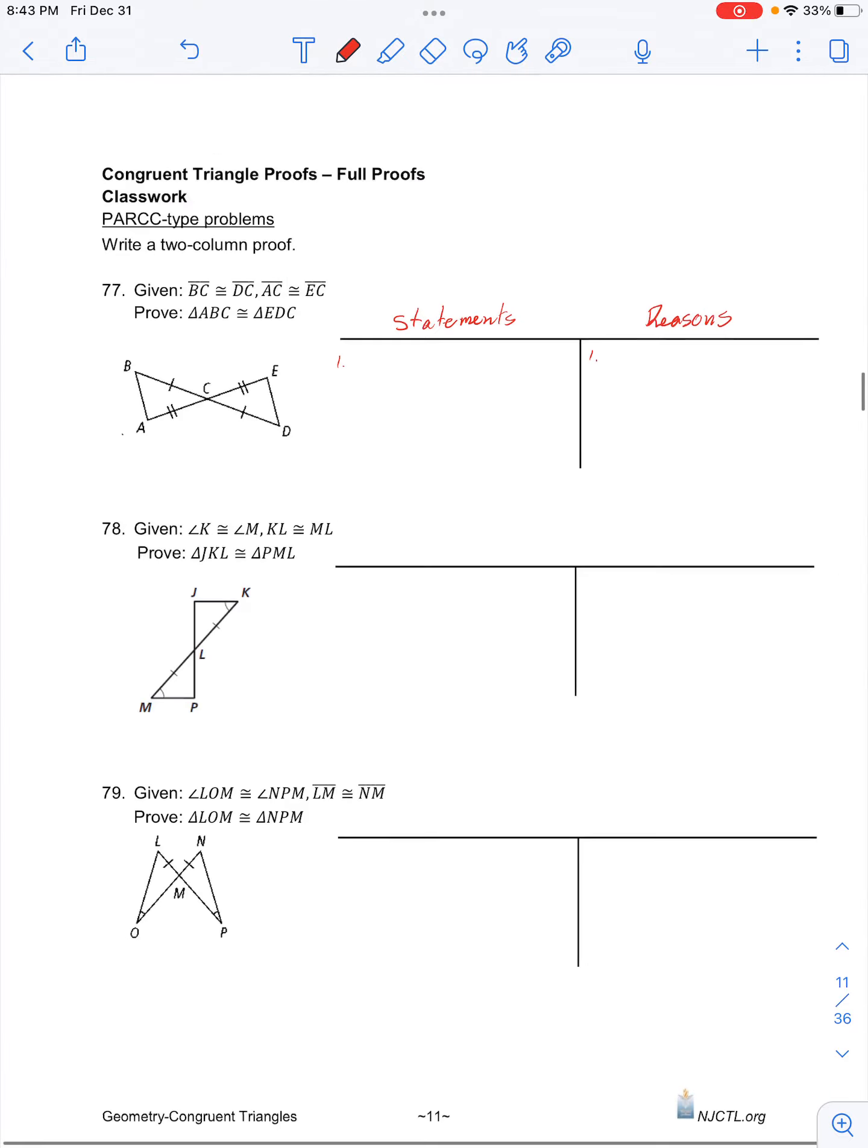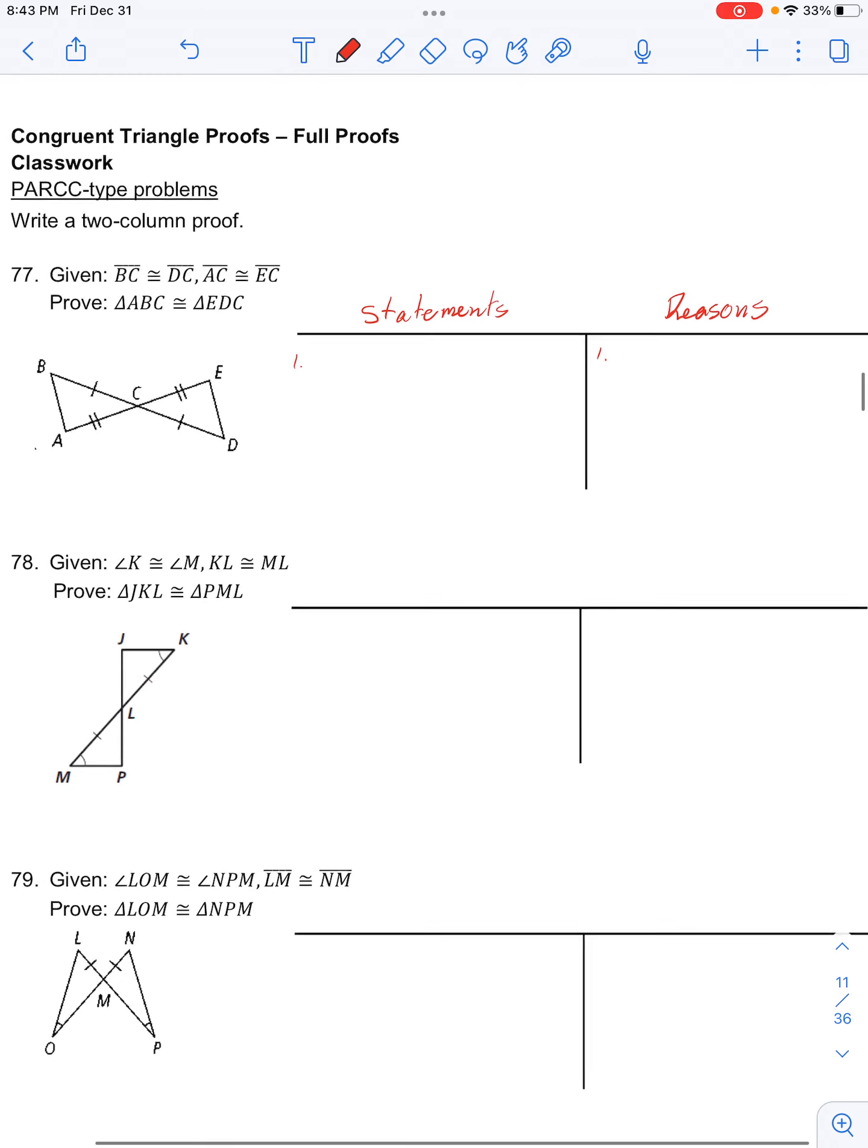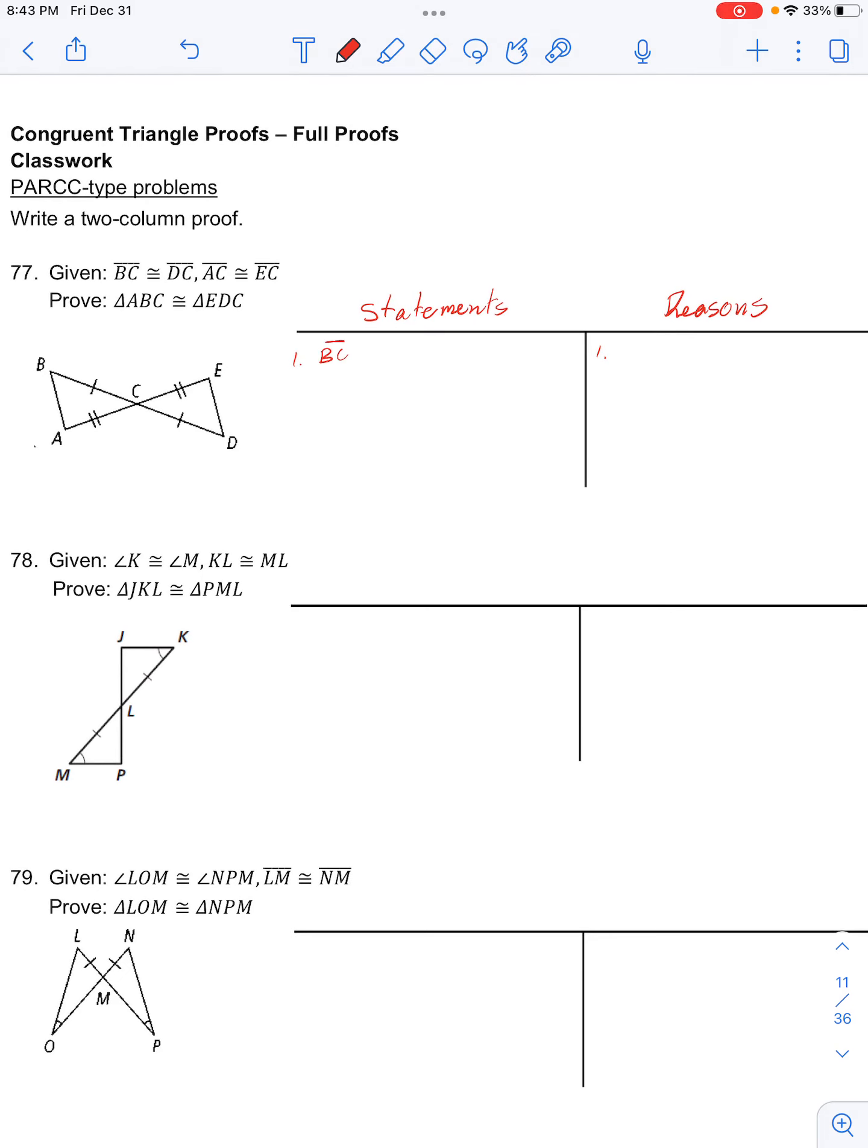We're going to start off with our given information. We have that BC is congruent to DC and also that AC is congruent to EC. This is a given.